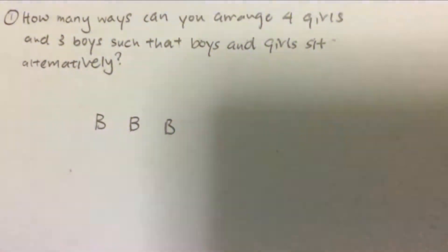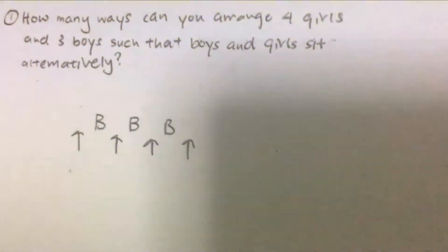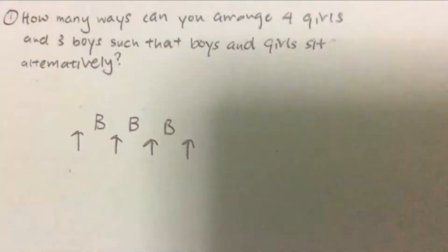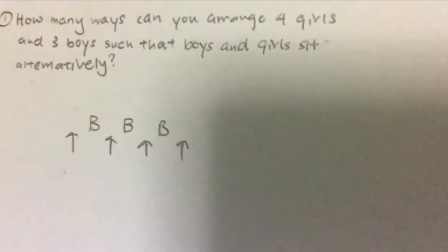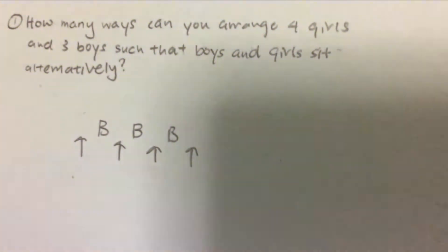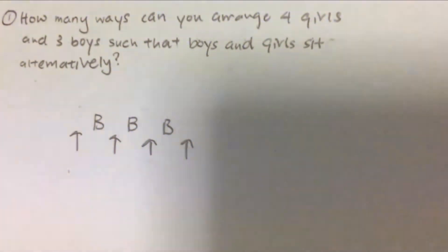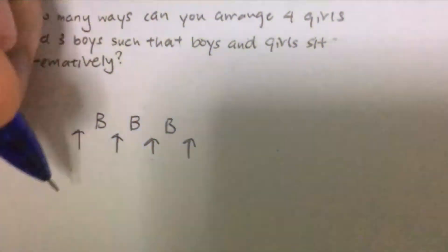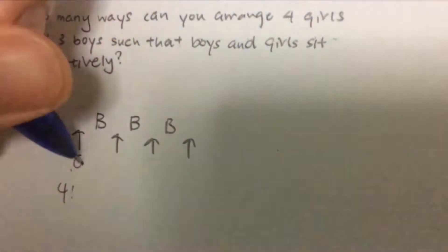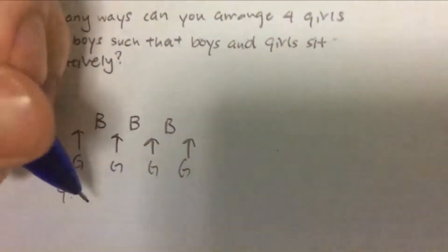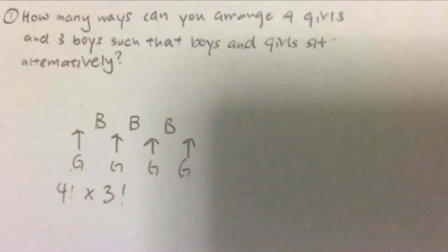Arrange the boys first, then indicate the positions in which you can slot the girls in. This gives a very clean set of positions. The answer to this question is four factorial, because you can arrange the girls within each other, times three factorial for the boys.